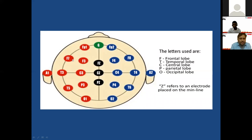When we look at the EEG recording and see activity in leads between F7 and F3, that means it is happening in the left frontal region. If it is between F7 and T3, that is the left temporal region. If between T6 and O2, that is the right occipital region. Z refers to the midline — FZ, CZ, and PZ refer to midline recordings.